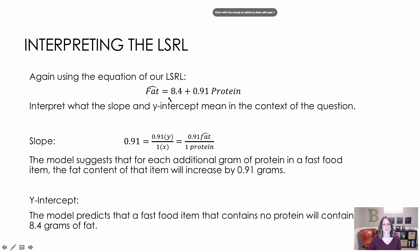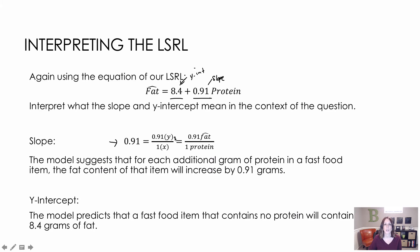We also want to be able to interpret the parts of the equation — the y-intercept and the slope. It's not enough to just say 8.4 is the y-intercept and 0.91 is the slope; we want to interpret these using proper wording. The slope is 0.91, and it's helpful to think of slope as change in fat over change in protein — or 0.91 over 1.